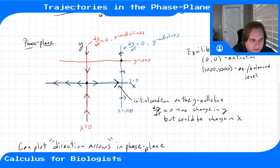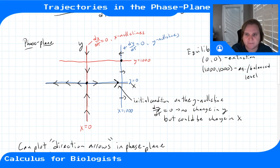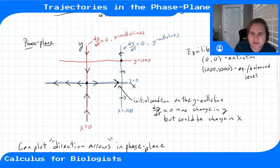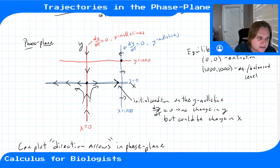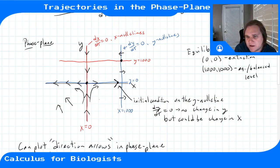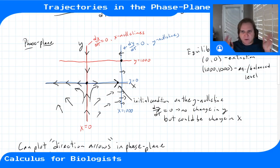If a solution starts on the x-nullcline, there's no left-right flow but there is a negative dy/dt — flowing downward toward that equilibrium point. Combining partial arrows, we see solutions flow in and then out. Arrows in the middle combine contributions from both directions: always going upward here, always going to the left there, giving arrows that curve and gradually flatten as they approach the nullcline where dy/dt equals zero.